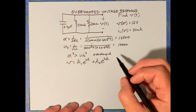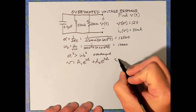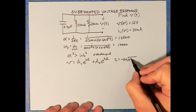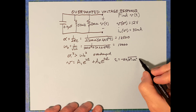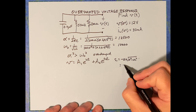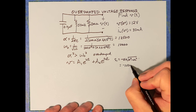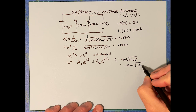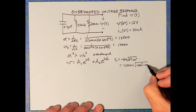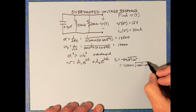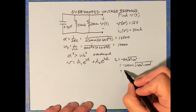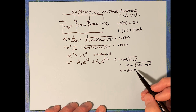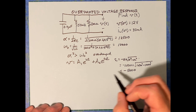Let's find s1 first. s1 equals negative alpha plus the square root of alpha squared minus omega-naught squared, which equals negative 12,500 plus the square root of 12,500 squared minus 10,000 squared. That calculation gives us negative 5,000 radians per second.